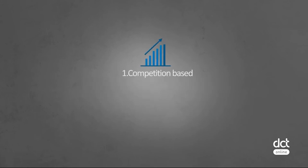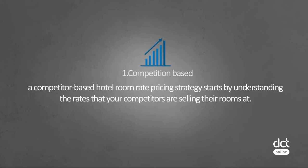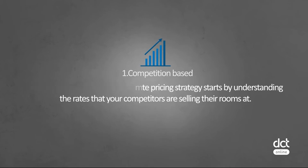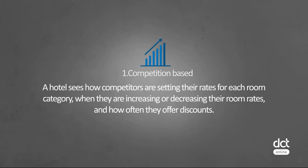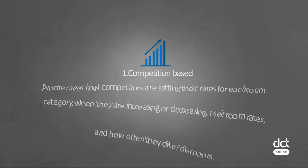Number one, competition based. A competitor based hotel room rate pricing strategy starts by understanding the rates that your competitors are selling their rooms at. A hotel sees how competitors are setting their prices for each room category, when they're increasing or decreasing their room rates, and how often they are discounted.